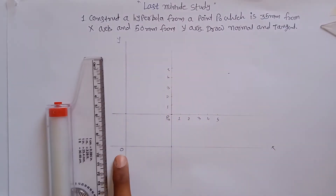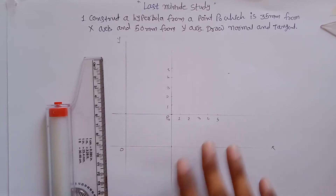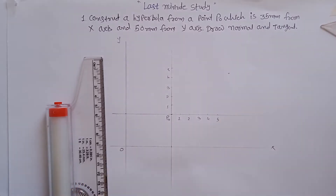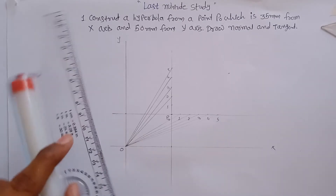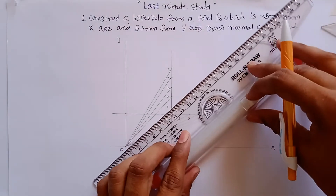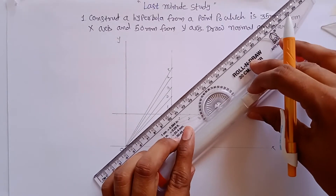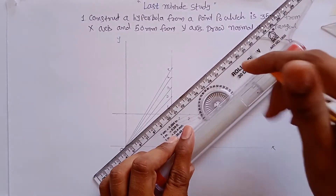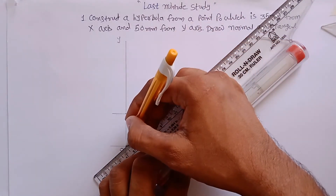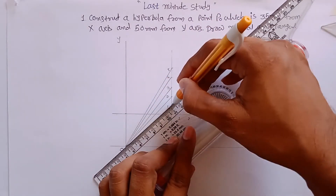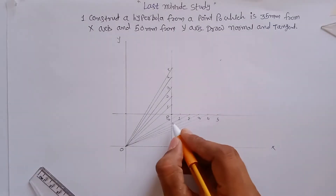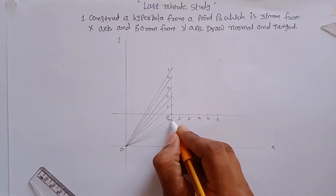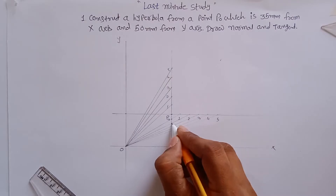Join points one, two, three, four, and five to the origin and extend the lines. Then identify the intersecting points where these lines cross the other reference line.